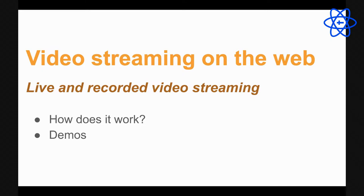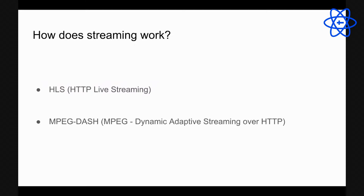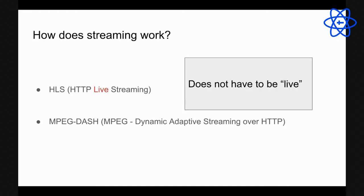How does live streaming work? There are basically two formats: HLS, which stands for HTTP Live Streaming, and MPEG-DASH, which is Dynamic Adaptive Streaming over HTTP. HLS was developed by Apple, but it doesn't have to be live — you can also watch video on demand with HLS.